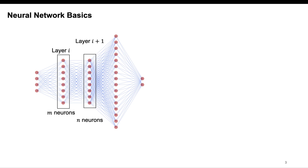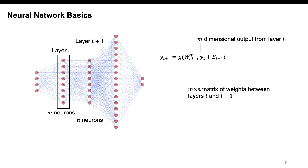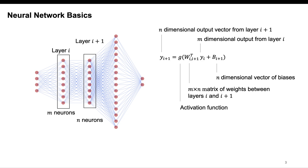These are the calculations done to get the output from layer I plus 1. The input is first the output from the previous layer — yi is the M-dimensional output from layer I. That gets multiplied by a matrix of weights, which is an N by M matrix of weights between layers I and I plus 1. After this multiplication, we add a vector of biases, which is an N-dimensional vector because layer I plus 1 has N neurons. After adding the biases, we evaluate the activation function — we have coded the ReLU function, but other functions could be implemented. Then we get our N-dimensional output vector from layer I plus 1.